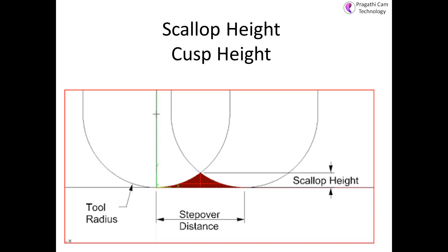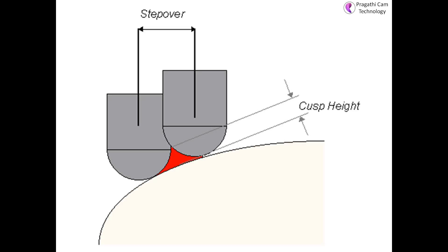We should understand where the component is going to be used. If the component is going for mirror finishing, meaning a lapping operation, then you should have a very good surface finish, which means you should maintain a very small scallop height. In lapping you use emery and diamond paste to achieve a mirror finish. If it is not going for mirror finishing, then you can use a better step over and get the required surface finish.